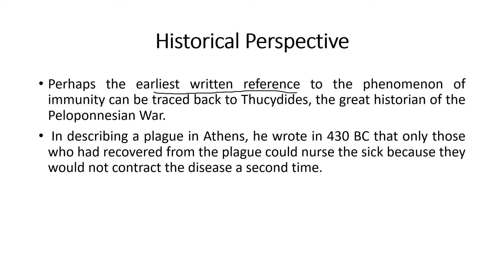There's a lot of history that led to the development of the immune system. There was an incident in Athens in 430 BC where it was observed that only those who had recovered from plague could nurse the sick, as they would not contract the disease a second time. It was discovered that those who had recovered from plague were immune and could help the infected ones.